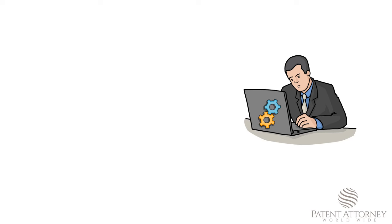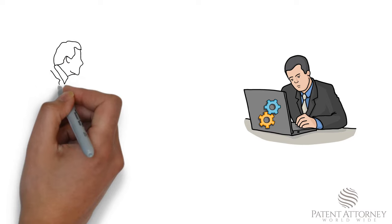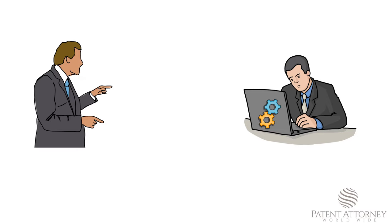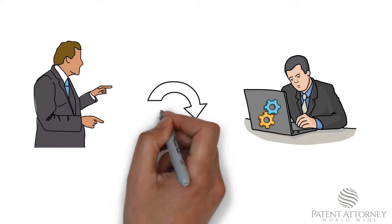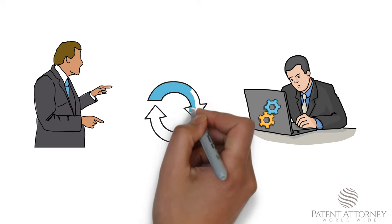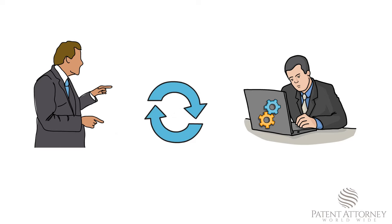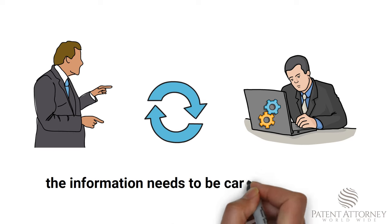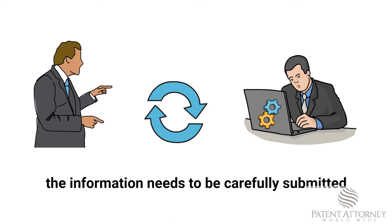Sometimes when you miss important information about the invention — that is, the inventive step — the patent attorney or patent agent working on your invention would get back to you and ask for additional details. This is the most important step from the inventor's side in the entire patent process, so the information needs to be carefully submitted.